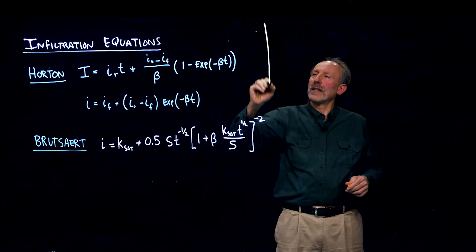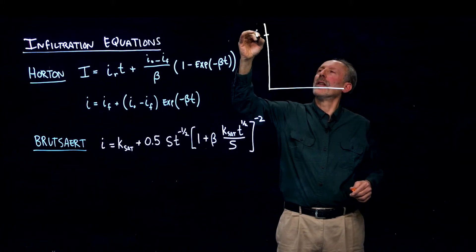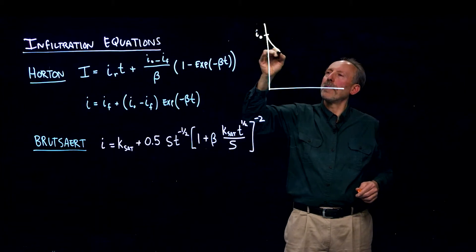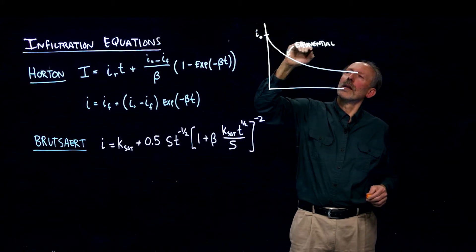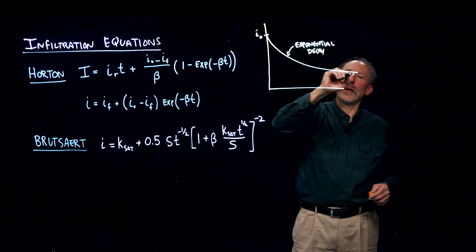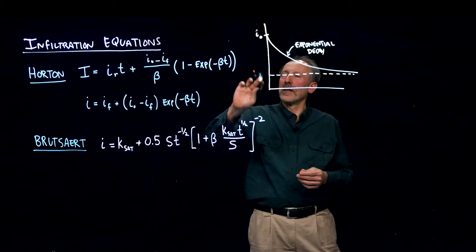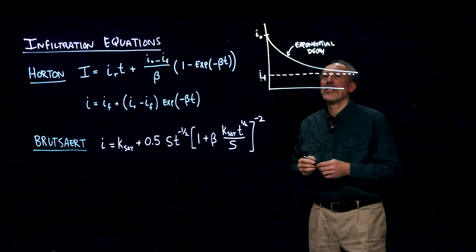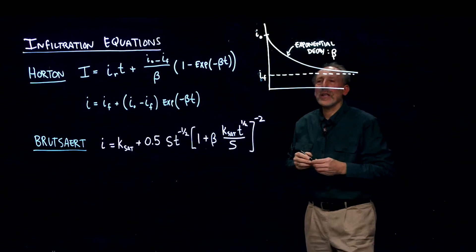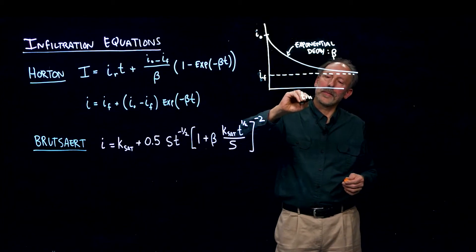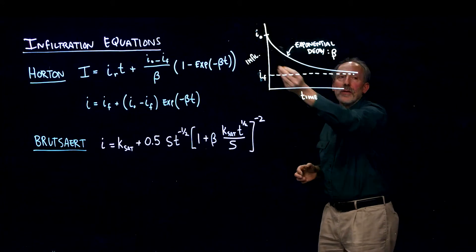What's that mean? That means that if we have at some initial rate of infiltration, then in time it exponentially decays and goes to some final rate of infiltration. And it does so with a decay coefficient of beta. So it really just says that in time, the rate of infiltration is exponentially decaying between an initial value and a final value.